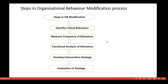Let us look at the overview flowchart of the steps in organizational behavior modification — how the process of behavior modification actually happens. First, identify the critical behavior. Second, measure the frequency of that identified behavior. After that, perform functional analysis. Then develop an intervention strategy. Lastly, evaluate the strategy and implement the best suitable choice of learning behavior into your existing behavior.